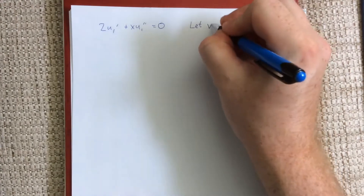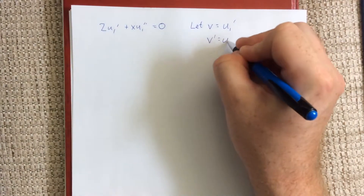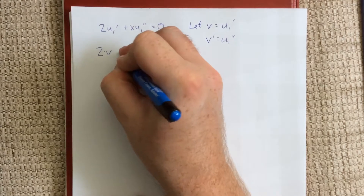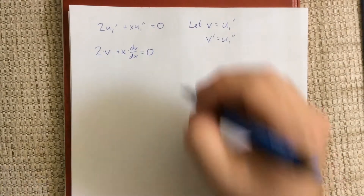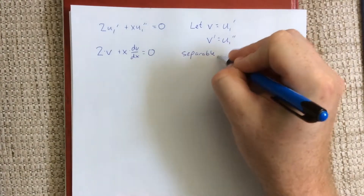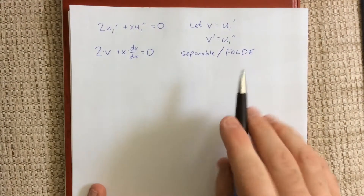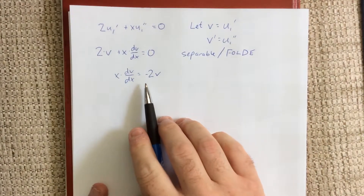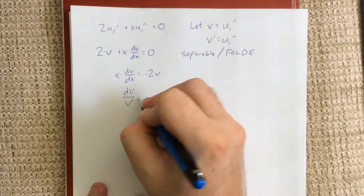At this point we employ the reduction of order. We let v be equal to u1 prime. Because all the u1 terms canceled out completely, this works out just fine. Then v prime is equal to u1 double prime. So we can express this as 2v plus x times dv/dx is equal to 0. You have options — this is guaranteed to be either separable or a first-order linear differential equation. I'm going to treat it as separable by subtracting 2v from both sides, then dividing both sides by x, multiplying by dx, and dividing by v.